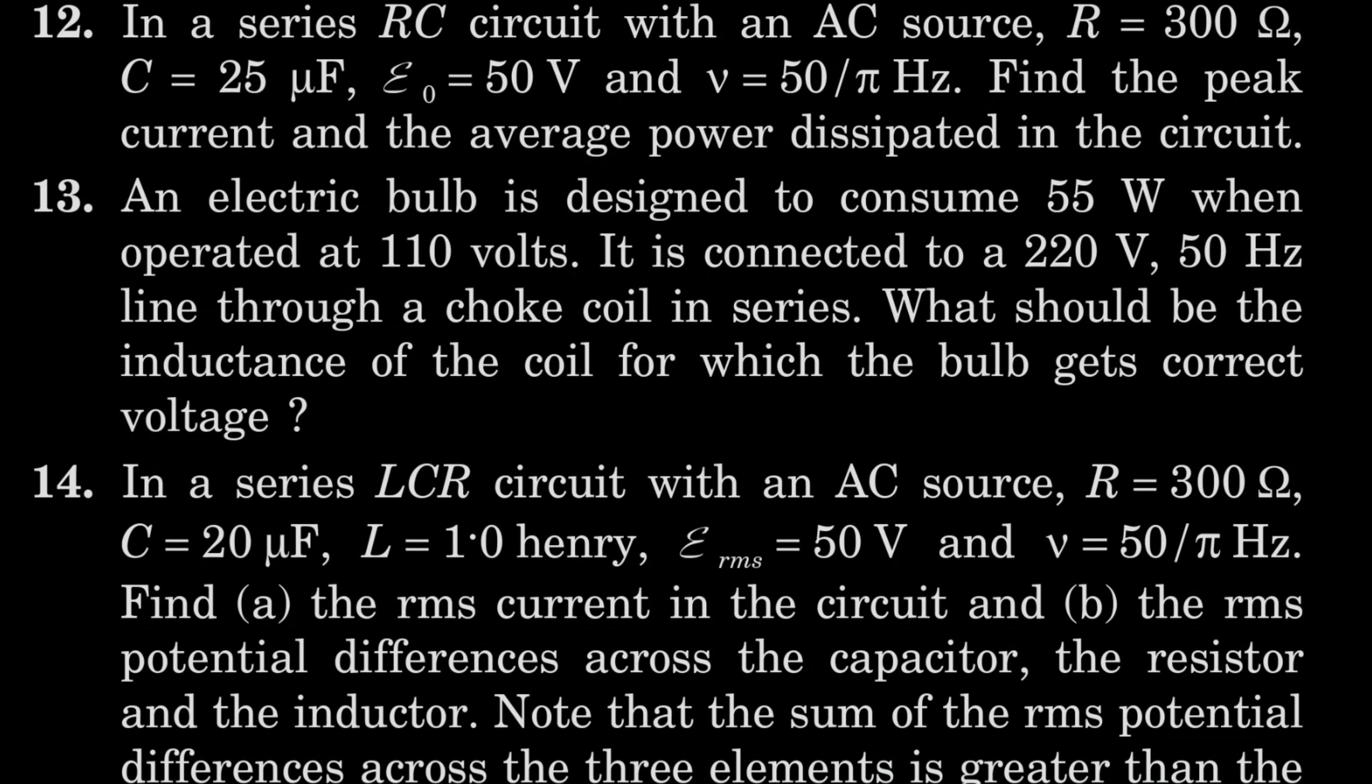In question 12 we need to find the peak current and the average power dissipated in the circuit. Solution 12: peak current will be E₀ by Z. Now E₀ is 50 volt and Z can be obtained by this formula R square plus X square, that is 300 square plus 10 to the power 4 over 25 square. After solving this we will get 0.1 ampere.